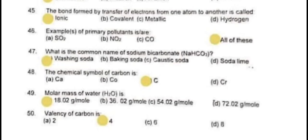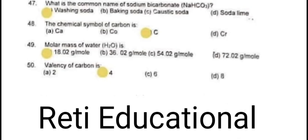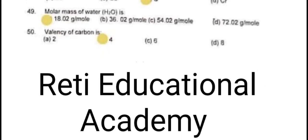Question 46: Examples of primary pollutants are all of these. Question 47: What is the common name of sodium bicarbonate (NaHCO3)? The correct answer is A – Washing soda. Question 48: The chemical symbol of carbon is C. Question 49: Molar mass of water (H2O) is 18.0 g per mole. Question 50: Valency of carbon is 4.